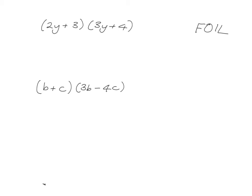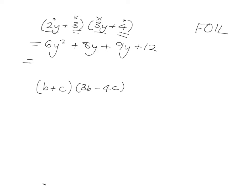Let's go over the first one: (2y+3)(3y+4). First: 2y times 3y gives 6y squared. Outside: 2y times 4 gives 8y. Inside: 3 times 3y gives 9y. Last: 3 times 4 gives 12. We check for like terms — 8y and 9y combine to give 17y. So the answer is 6y squared plus 17y plus 12.